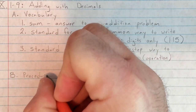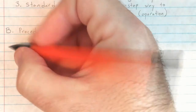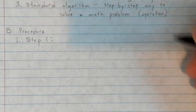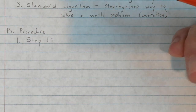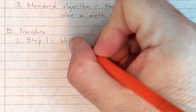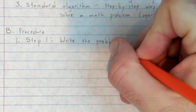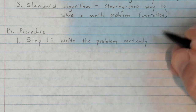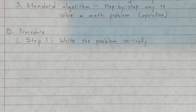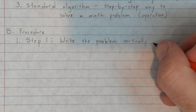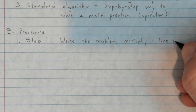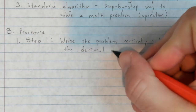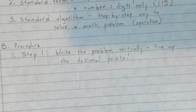Now for today's procedure. Step one: the first thing you're going to do when adding decimals is write the problem vertically — up and down. You need to be careful to line up the decimal points.